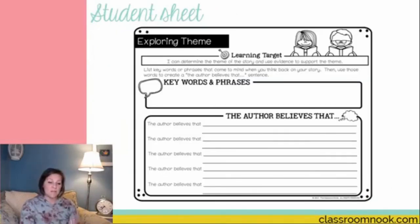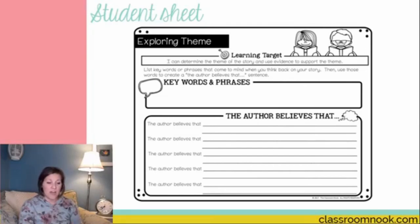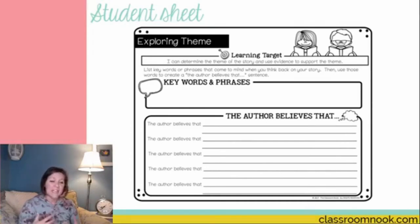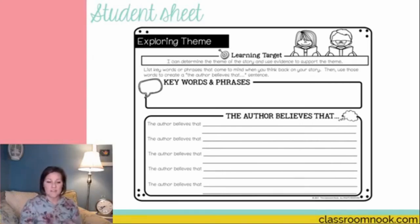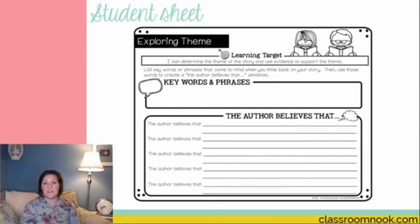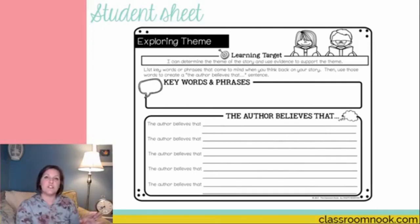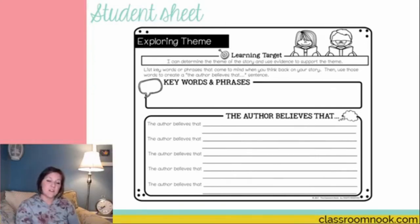This is the sheet I'm currently using for teaching theme in my units — straight out of my new novel unit, The One and Only Ivan. At the top, students list their key words, probably done as a group. They can cross out ones that don't apply to the whole story, then turn the remaining words into 'The Author Believes That' sentences, using words like home, freedom, and determination. This starts as a whole-class activity, and later students can do it independently.